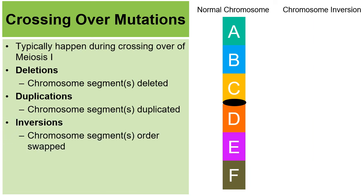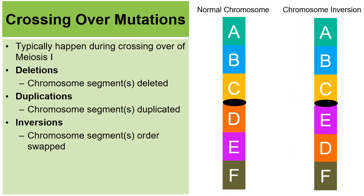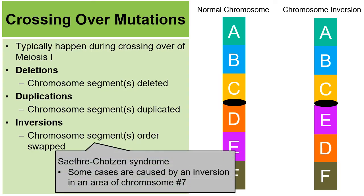Then there are inversions, where the order of chromosome segments is swapped with one another. During crossing over, segments might get swapped. When researching this, it turns out some of these inversions don't cause any health effects, but some do. Some cases of this disorder are caused by an inversion of chromosome number seven — so inversions are not always guaranteed to lead to problems, but sometimes they do.